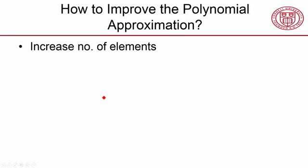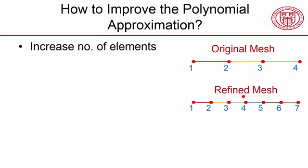There are two ways to do this. First is to increase the number of elements, and this, I think, is intuitive. In our original mesh, we had three elements. And then we can generate a refined mesh where we have six elements. In our original mesh, we assumed the shape is a combination of three linear polynomials. Now we are assuming that it's a combination of six linear polynomials, and that's better.